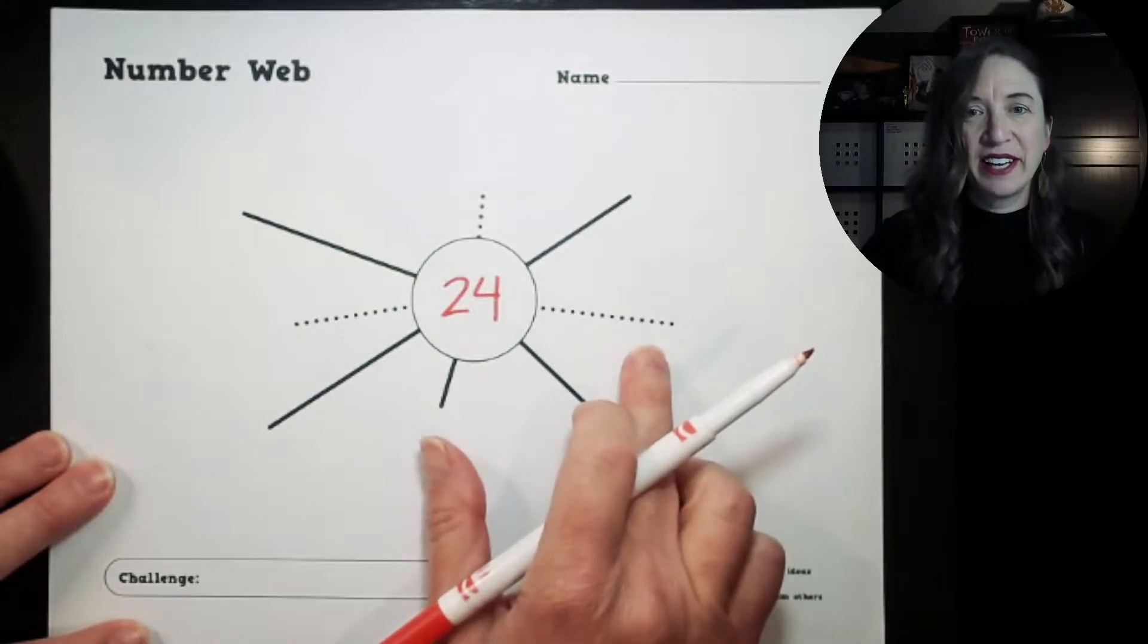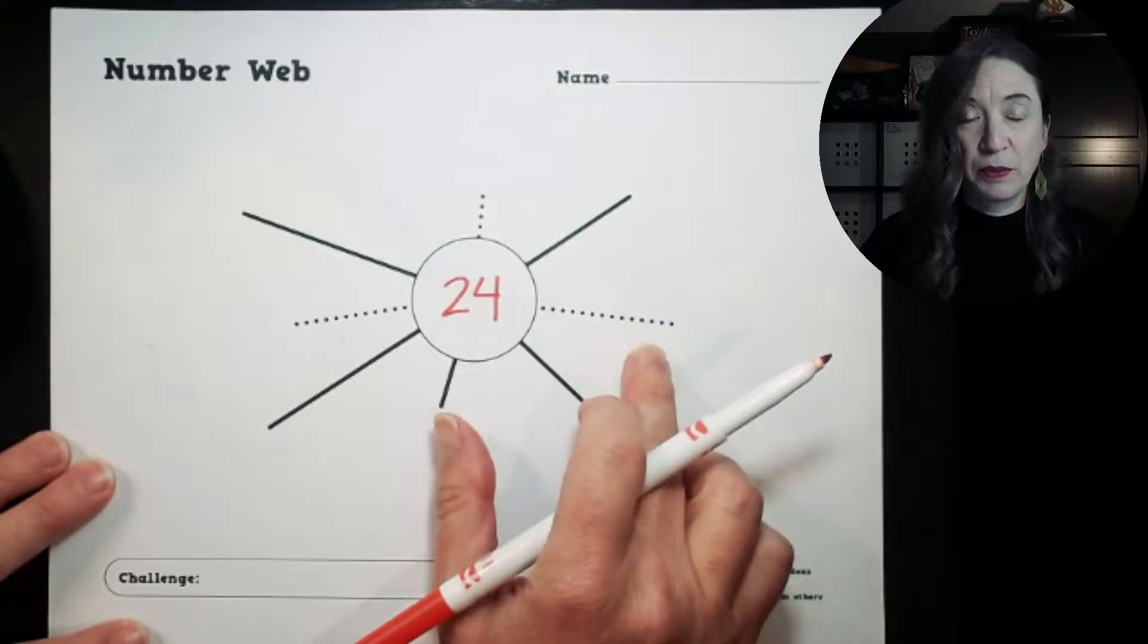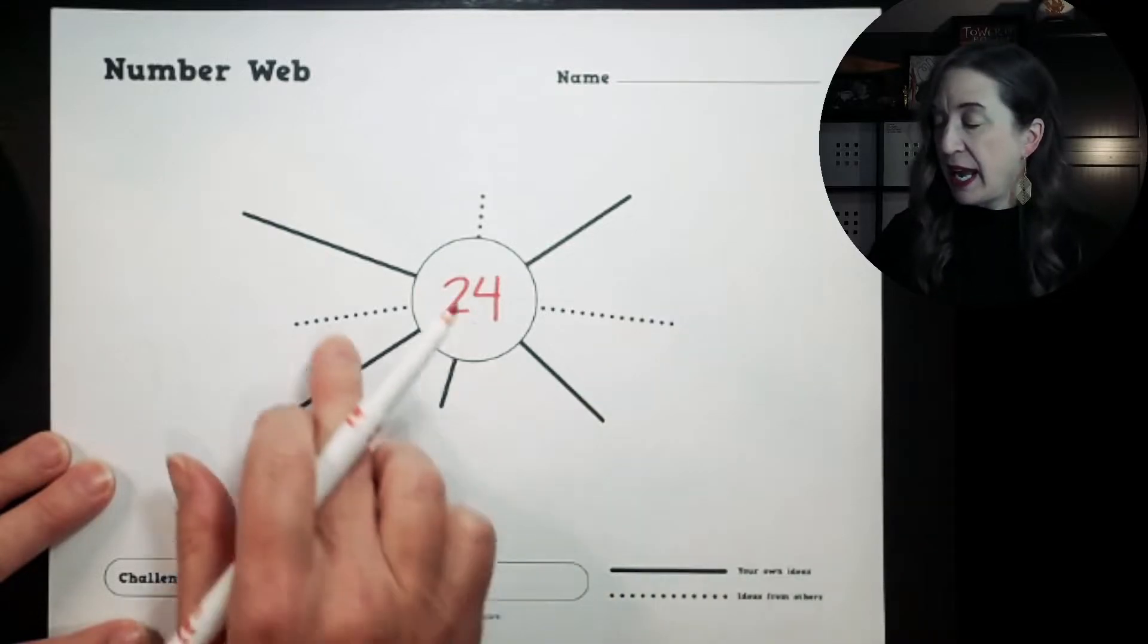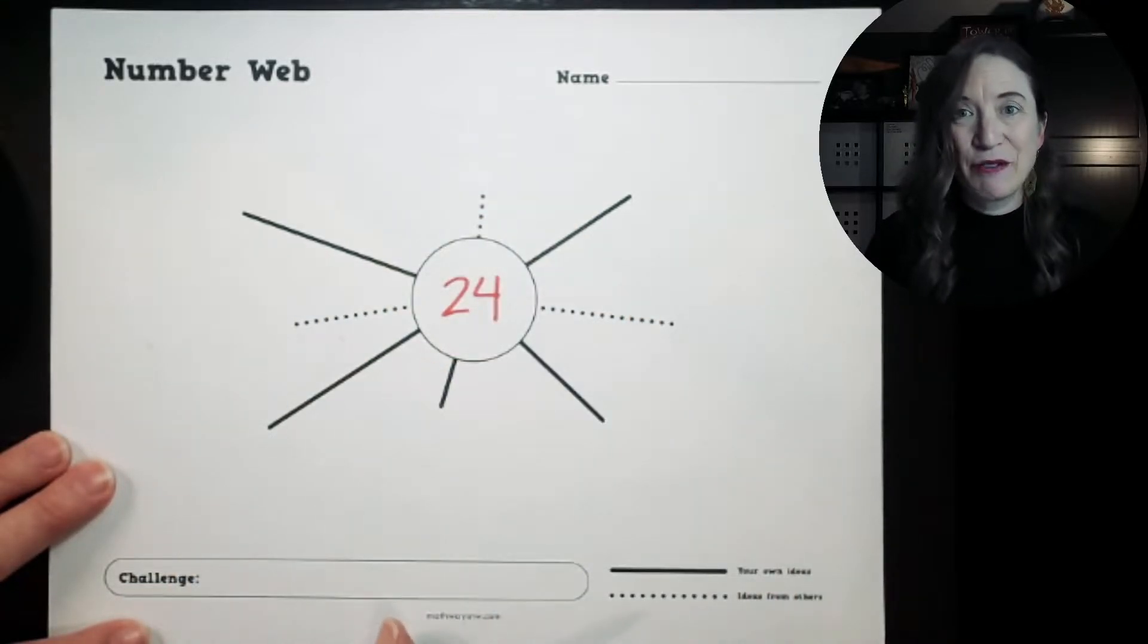And then the dotted lines are for you to talk to a friend or a partner or somebody at your table and get three more ideas for a different way to express 24. In this case, it says ideas from others.